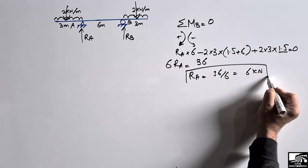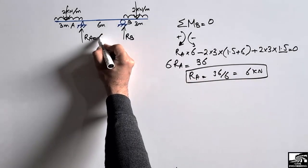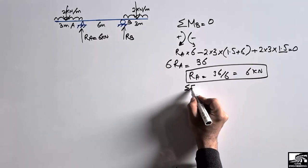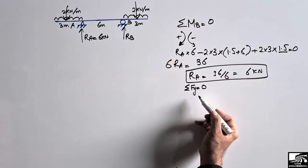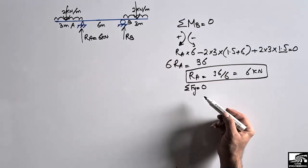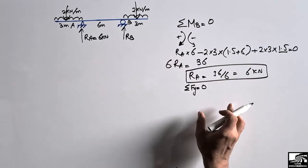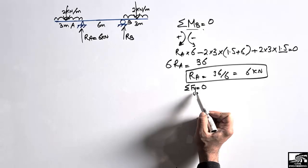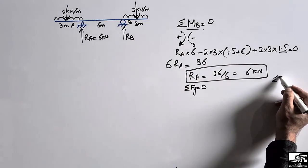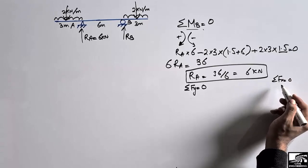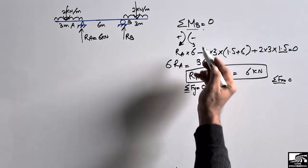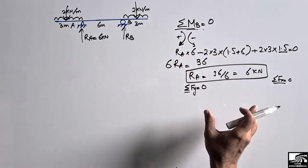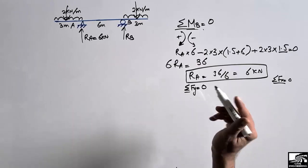Now we find RB using the equilibrium equation where the summation of all vertical forces equals zero. We can use three equilibrium equations to find support reactions for a statically determinate beam: summation of moments equal to zero, summation of vertical forces equal to zero, or summation of horizontal forces equal to zero. Using these three equations we can find the support reactions and solve our statically determinate problem.